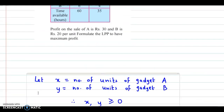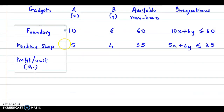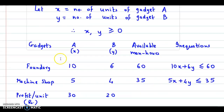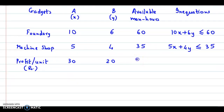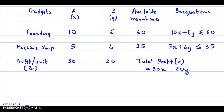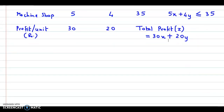Now, profit on A is rupees 30 and on B is rupees 20 per unit. So profit per unit is 30 for A and 20 for B. Therefore, the total profit Z would be: for X units of A the profit is 30X, and for Y units of B the profit is 20Y. So the total profit is Z equals 30X plus 20Y. Now we just combine all conditions together to get the LPP.